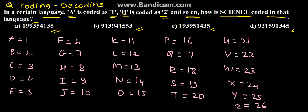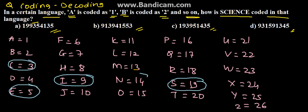Now we need to find the code for SCIENCE. S is 19, C is 3, I is 9, E is 5, N is 14, C is 3, and E is 5. So the code will be 19, 3, 9, 5, 14, 3, 5.